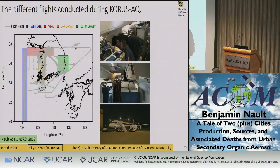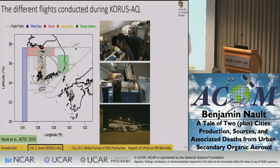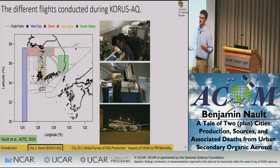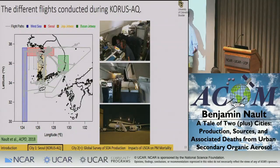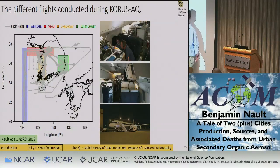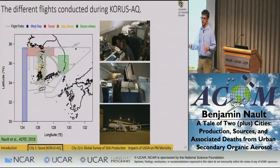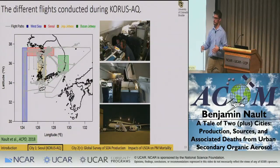The DC-8 was stationed just south of Seoul at Osan Air Force Base, and we did 20 research flights. The general pattern: at 8 a.m. we would take off, fly very low over Seoul around 8 to 9 in the morning, then spiral up to around 25,000 to 30,000 feet over a forested region, and fly one of three jetways — the West Sea, Jeju, or Busan. We would fly four altitude legs, return to Seoul around lunchtime, fly low again, then pick another jetway for the afternoon. We got around 60 missed approaches over Seoul, providing a rich dataset to study SOA production.